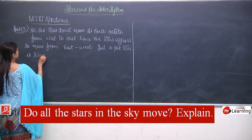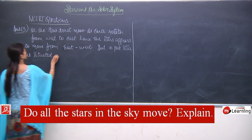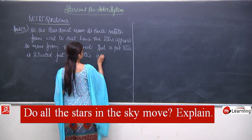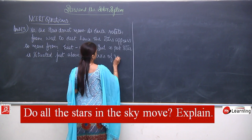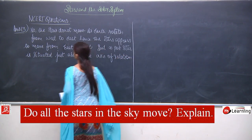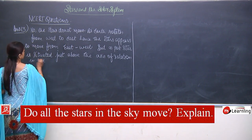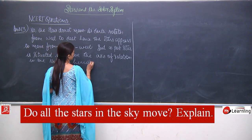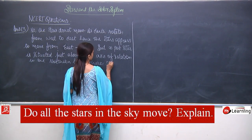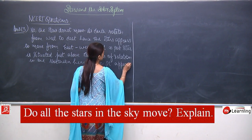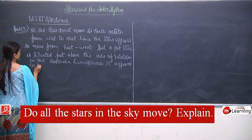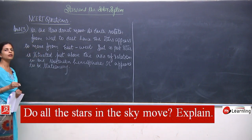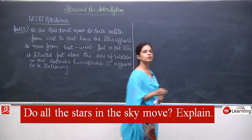And in the case of the Pole Star — the Pole Star is situated just above the axis of rotation in the northern hemisphere — it appears to be stationary. Hope this is very clear to you all, because this we have discussed many times.